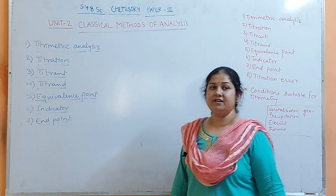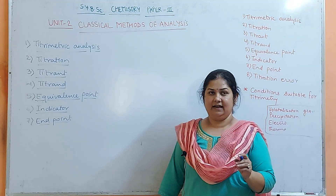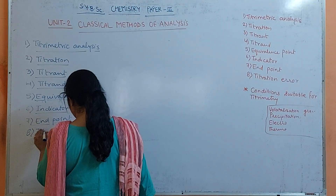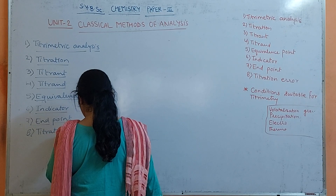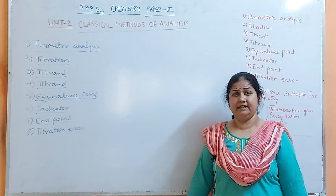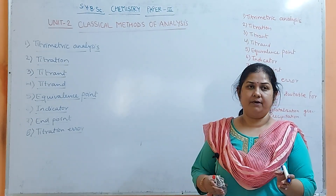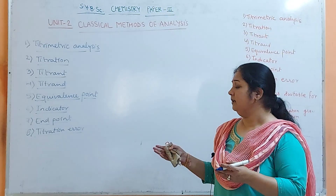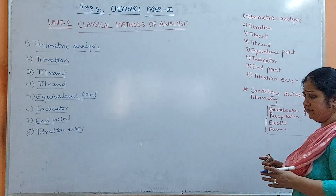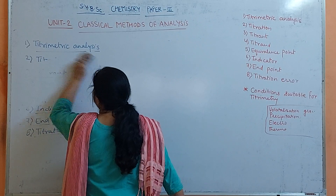Next is End Point. It is the point at which the indicator signals the completion of the reaction — that is called as the End Point. Next is Titration Error. The equivalence point and end point will not always coincide with each other. There will be a certain difference between the end point and the equivalence point, and that difference is called as Titration Error.